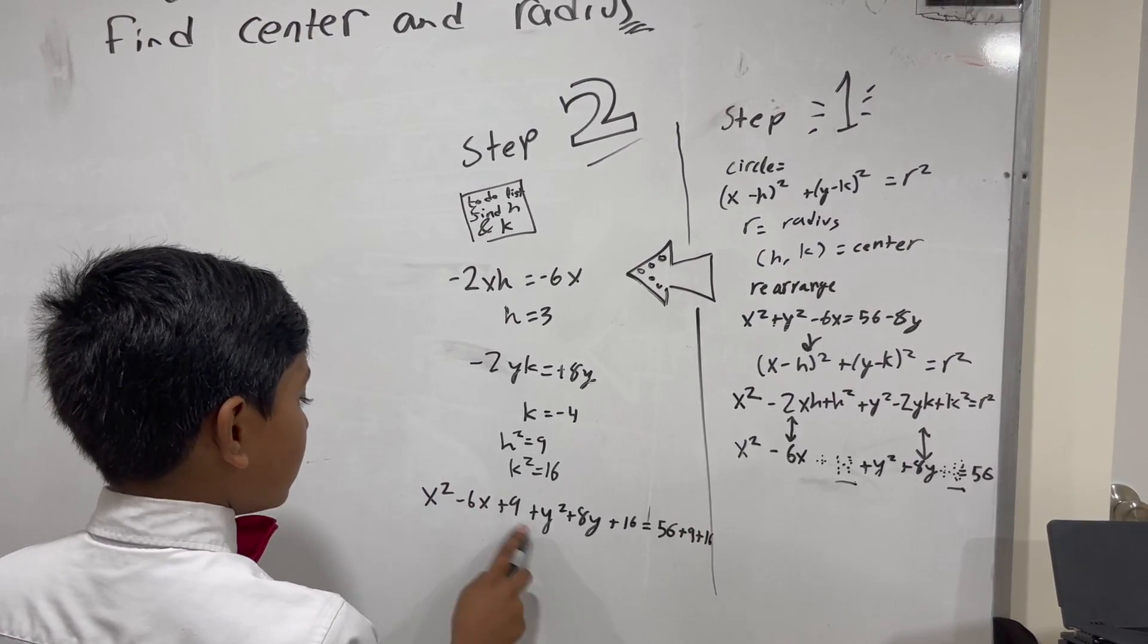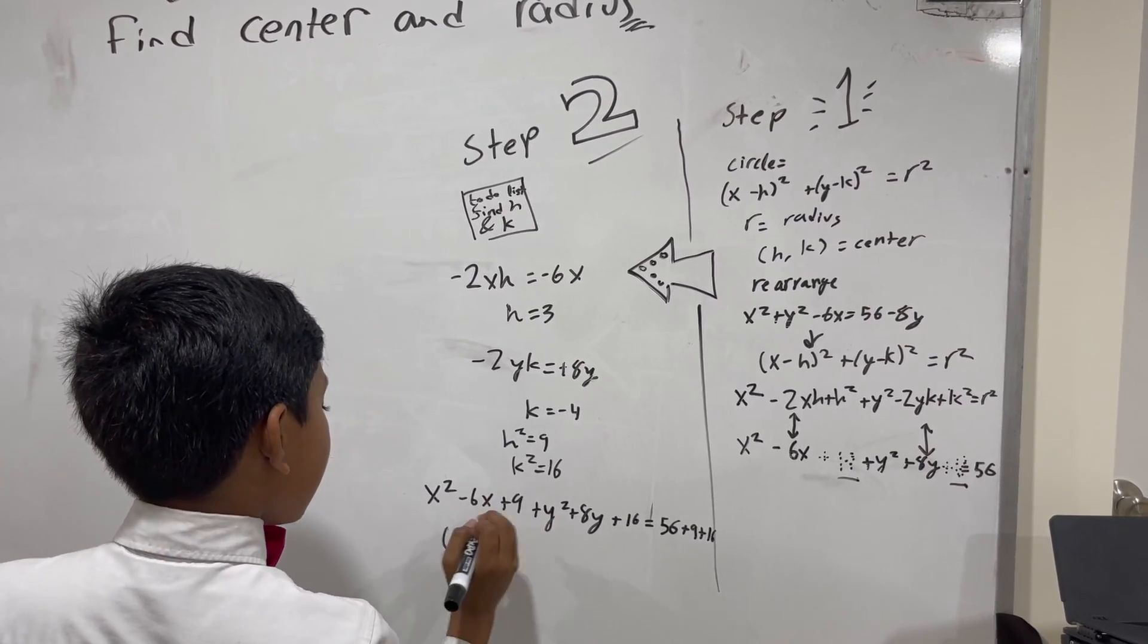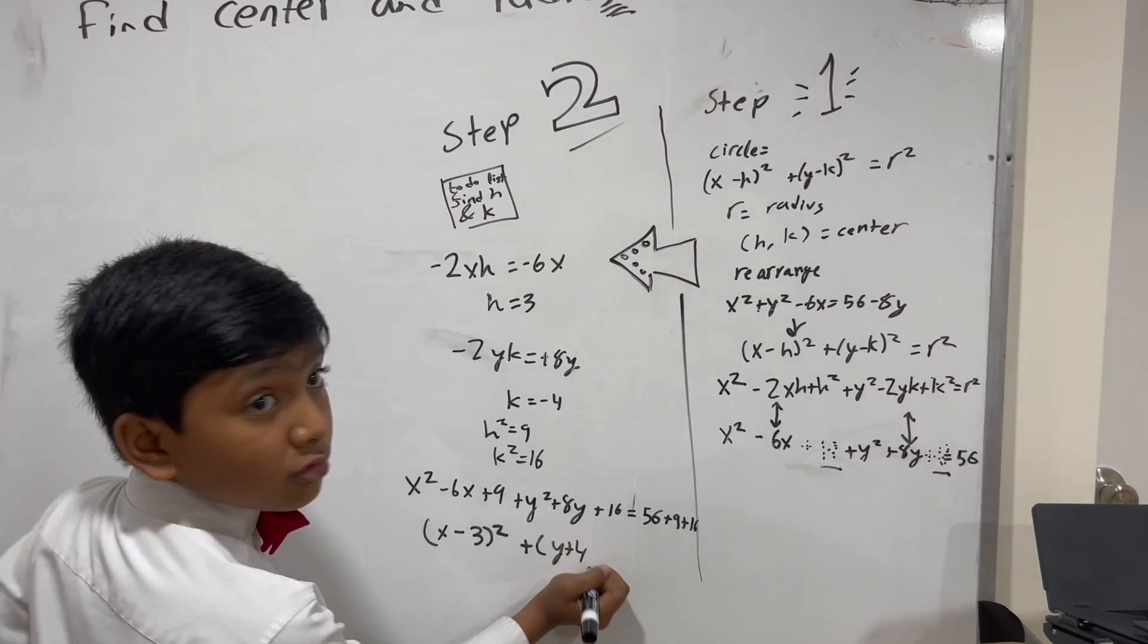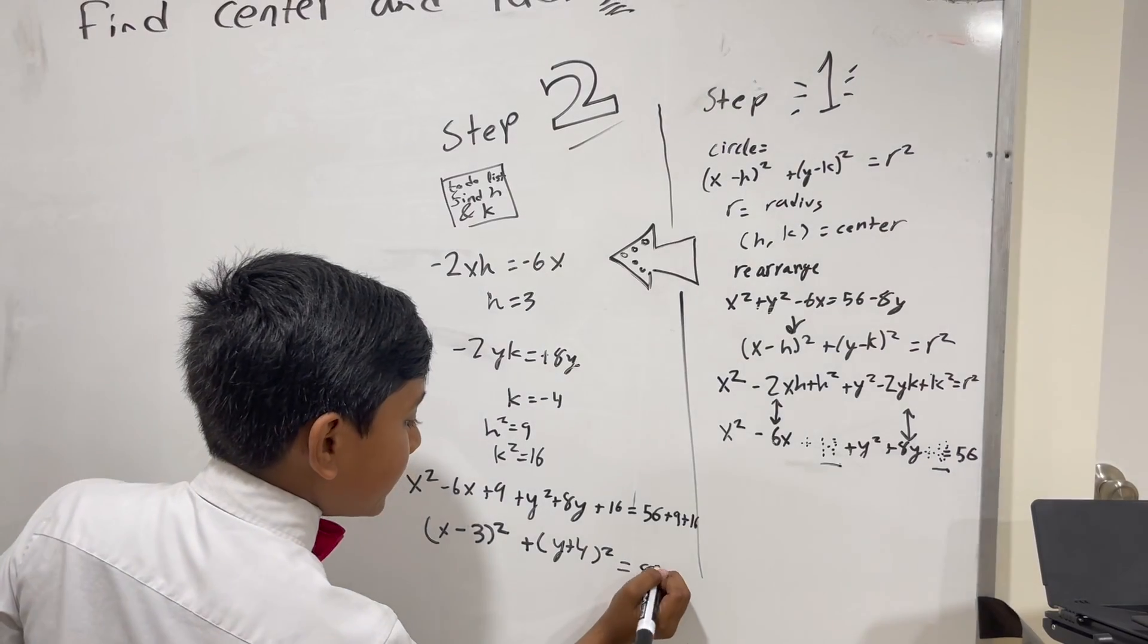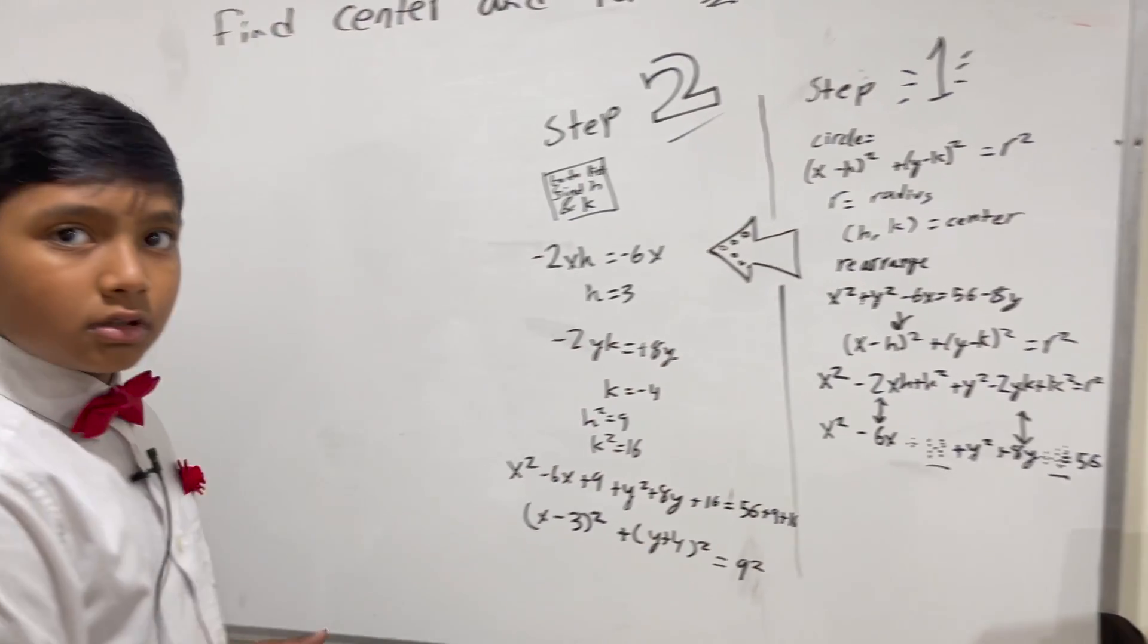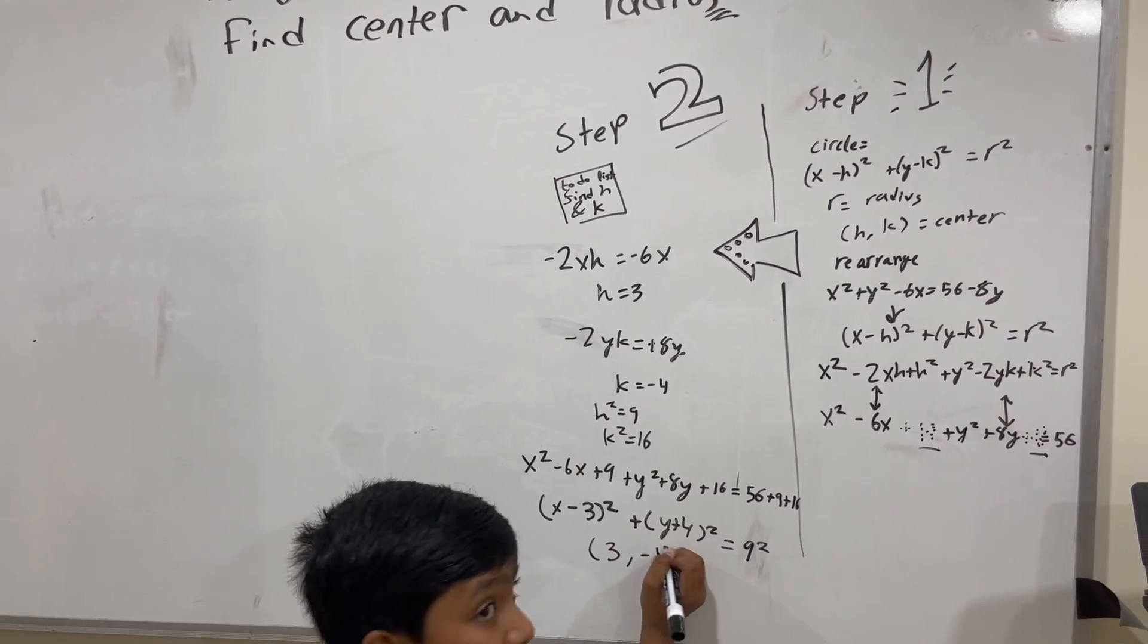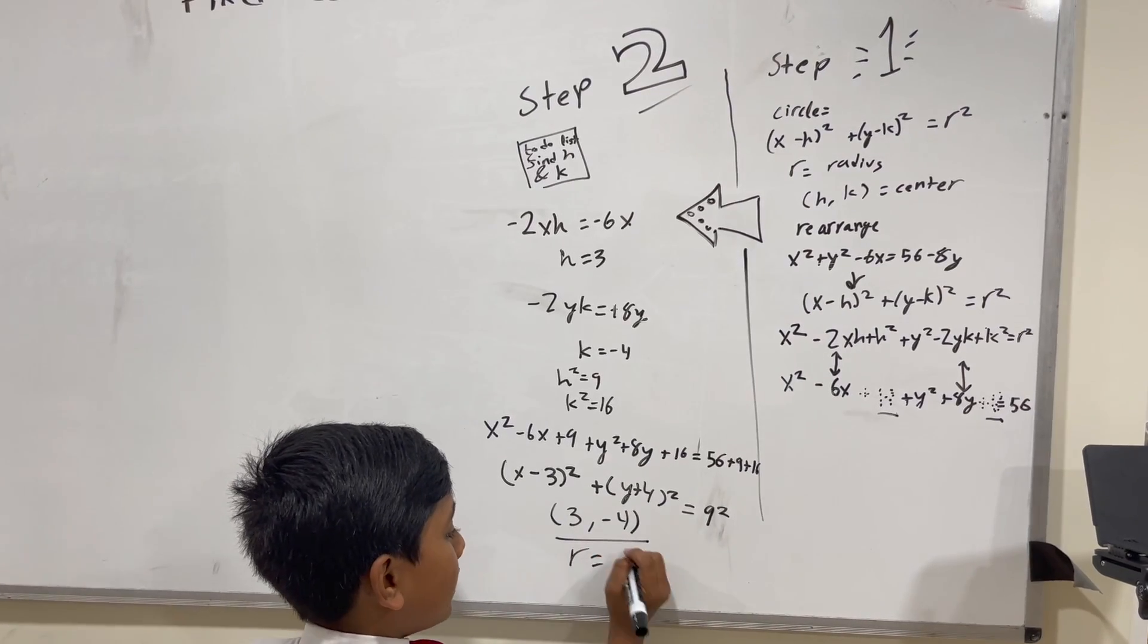So, now, this is going to be factored, which gives us X minus 3 squared, and then this is going to be factored, giving us Y plus 4 squared. And, adding up all these terms gives you 81, which, no coincidence, is 9 squared. So, that means that the coordinates are 3 comma negative 4, and the radius is 9.